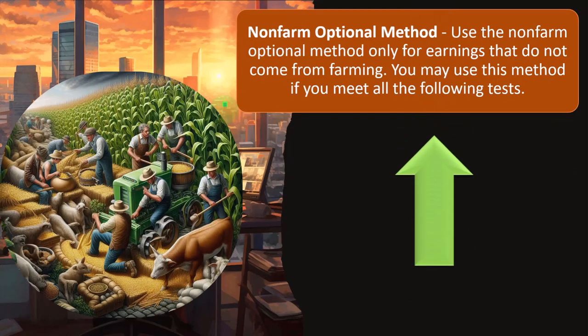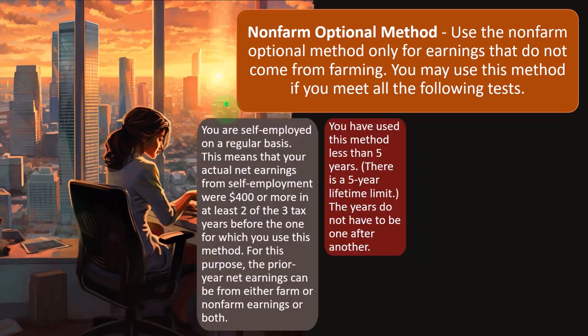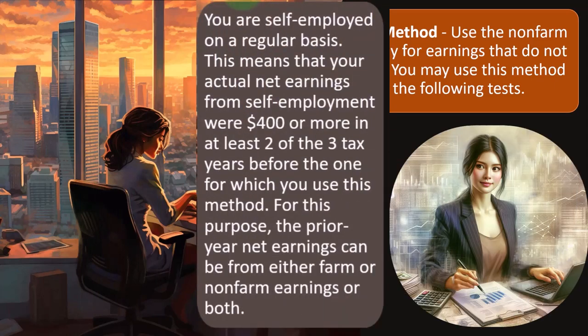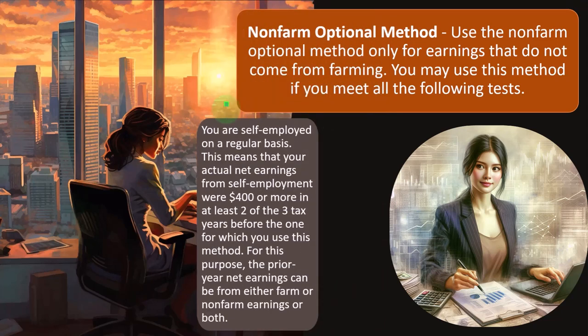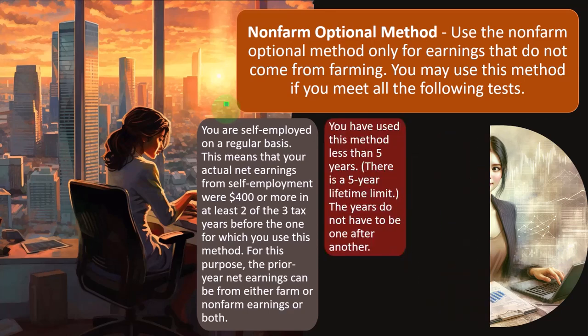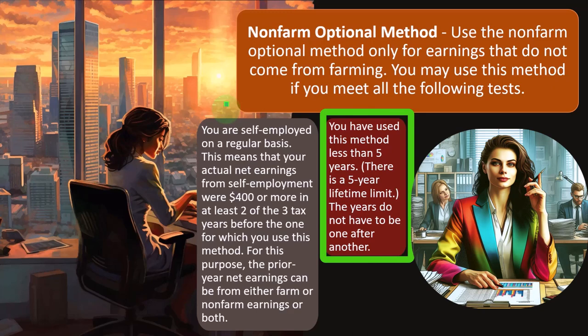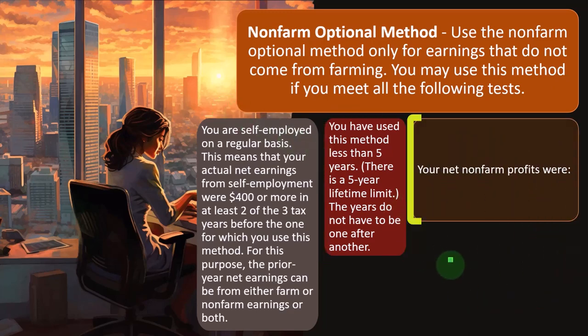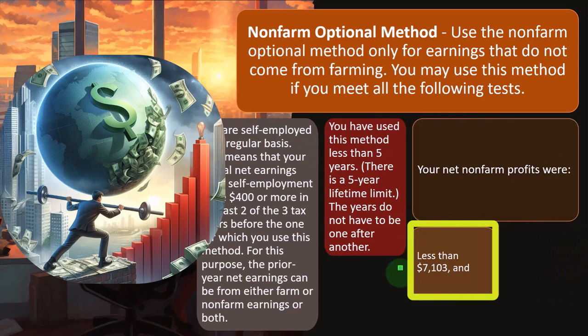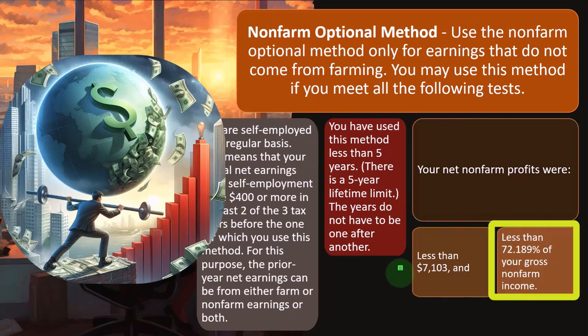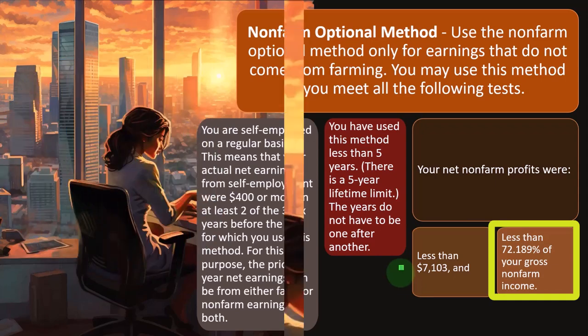Non-farm optional method: use this method only for earnings that do not come from farming. You may use this method if you meet all the following tests. You are self-employed on a regular basis — meaning your actual net earnings from self-employment were $400 or more in at least two of the three tax years before the one for which you use this method. You have used this method less than five years — there's a five-year lifetime limit, and the years do not have to be consecutive. Your net non-farm profits were less than $7,103 and less than 72.189% of your gross non-farm income.